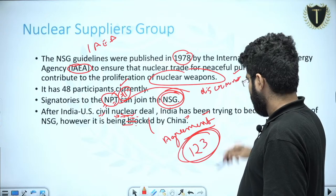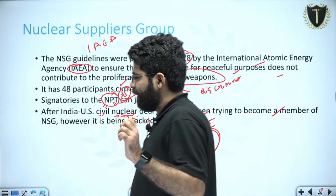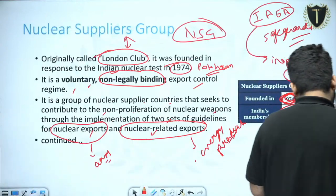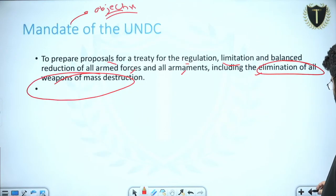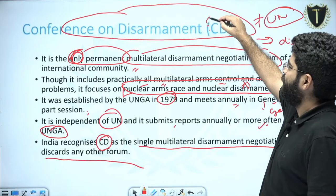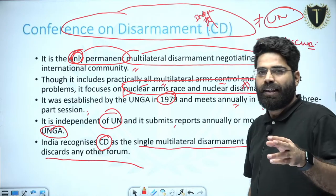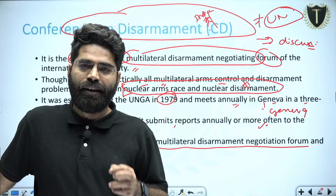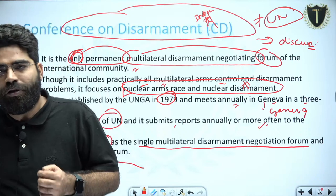India wants to become a member of the NSG but does not want to join the NPT because it is discriminatory. I hope the three topics discussed today — NSG, Conference on Disarmament, and the UN Disarmament Commission — are clear. Remember that the Conference on Disarmament is the only forum India recognizes for nuclear disarmament. We will meet in the next lecture with new topics. Keep studying and keep revising — all the best, thank you.